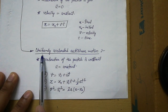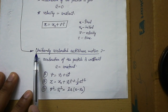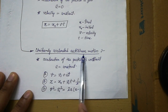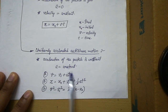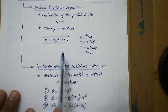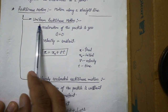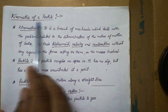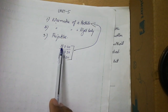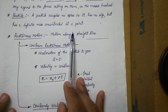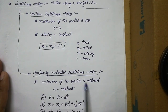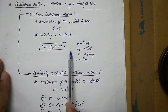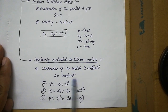If a problem states the body is moving with uniformly accelerated motion, only these three equations are applicable — the uniform rectilinear motion equation is not applicable. Similarly, if the body is moving under uniform rectilinear motion, use only that one equation and not the three acceleration equations. While solving problems in these three files, apply this concept: identify which type of motion is given and use the corresponding equations.